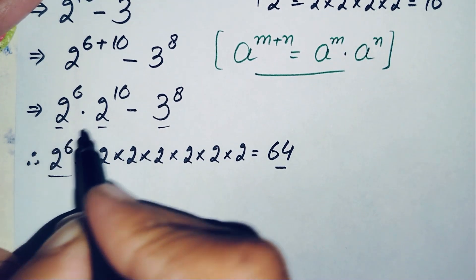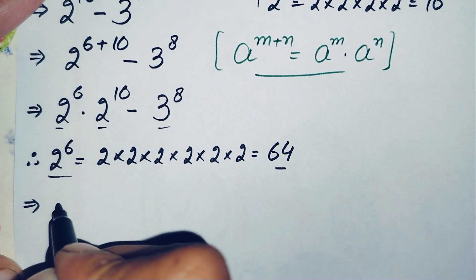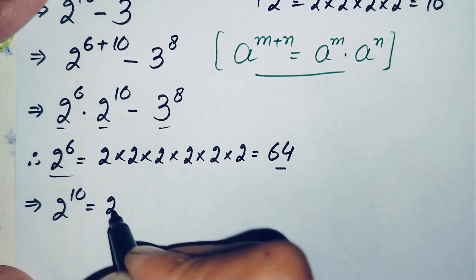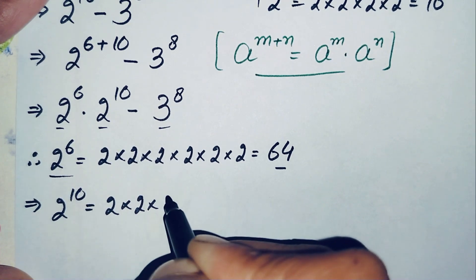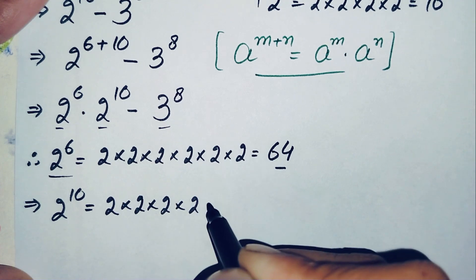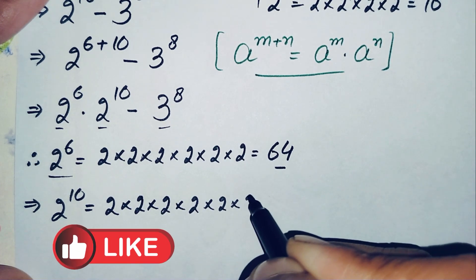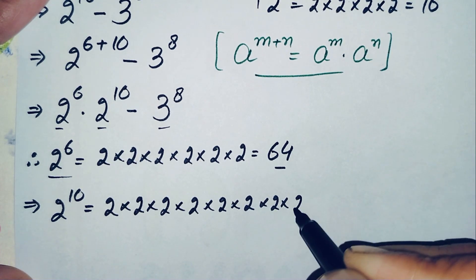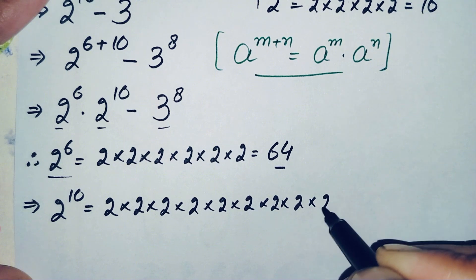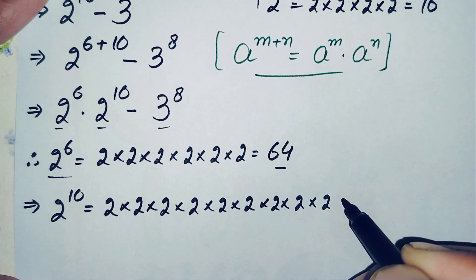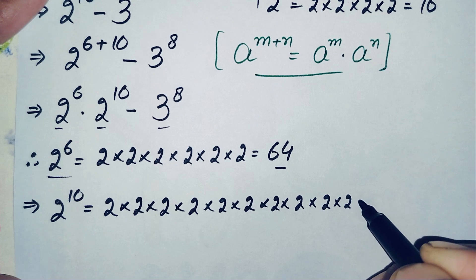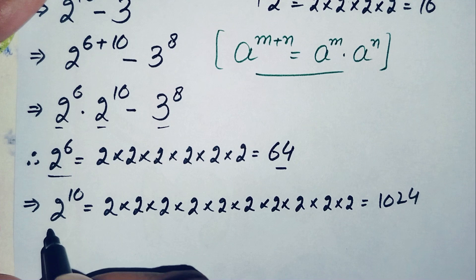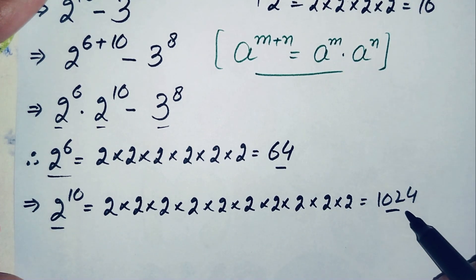Next, we find the value of 2 raised to power 10 by multiplying 2 ten times: 2×2=4, 4×2=8, 8×2=16, 16×2=32, 32×2=64, 64×2=128, 128×2=256, 256×2=512, 512×2=1024. So the value of 2 raised to power 10 is 1024.